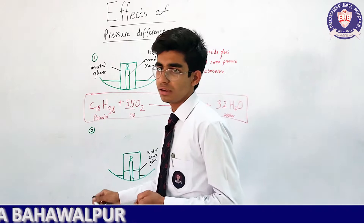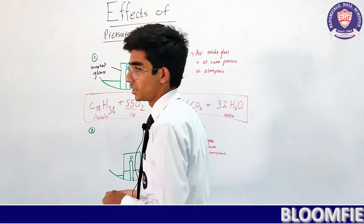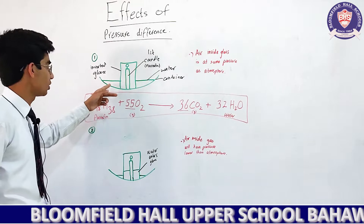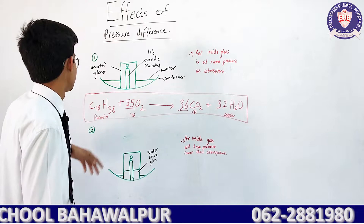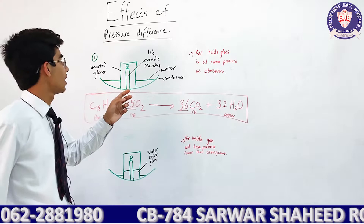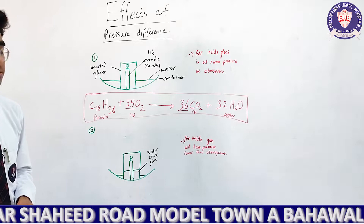In the experiment we will take a candle, place it in a container, and put an inverted glass on it. The candle will already be there and then we pour some water into it. The candle is made of paraffin. At the initial stage, the pressure will be at the same level as the air outside the glass.